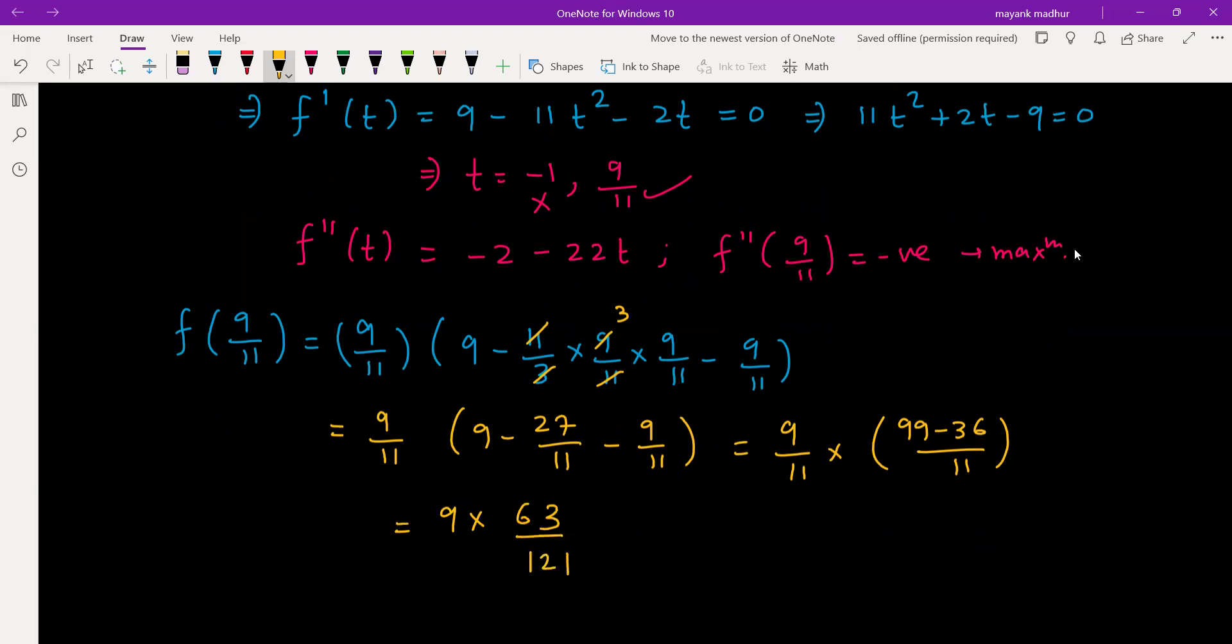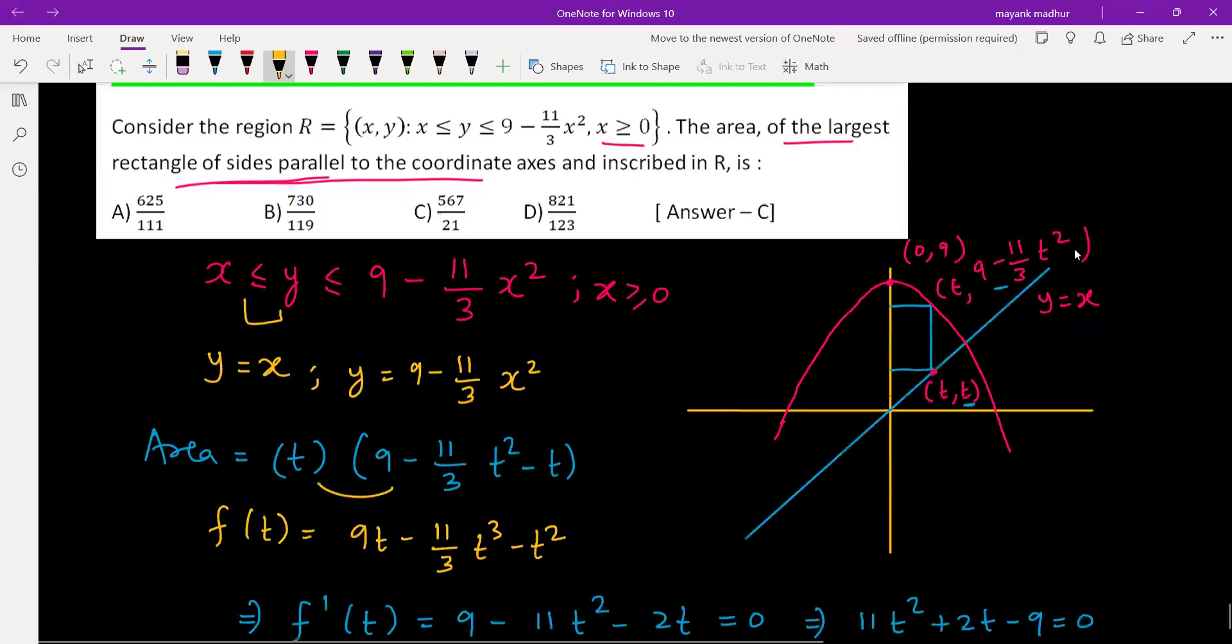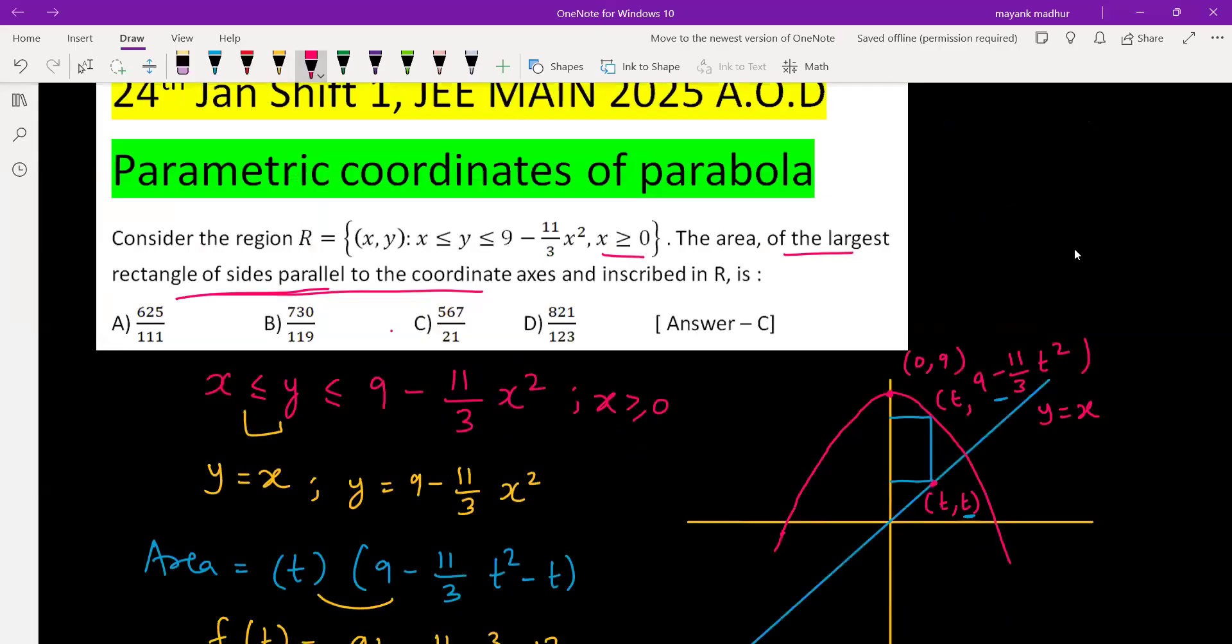Again it will be 9 into 9 minus 6, which is 3. 9 minus 6 is 63 by 11 into 11, which is 121. So this will be 567 by 121. So the answer is C, which is 567 by 121.